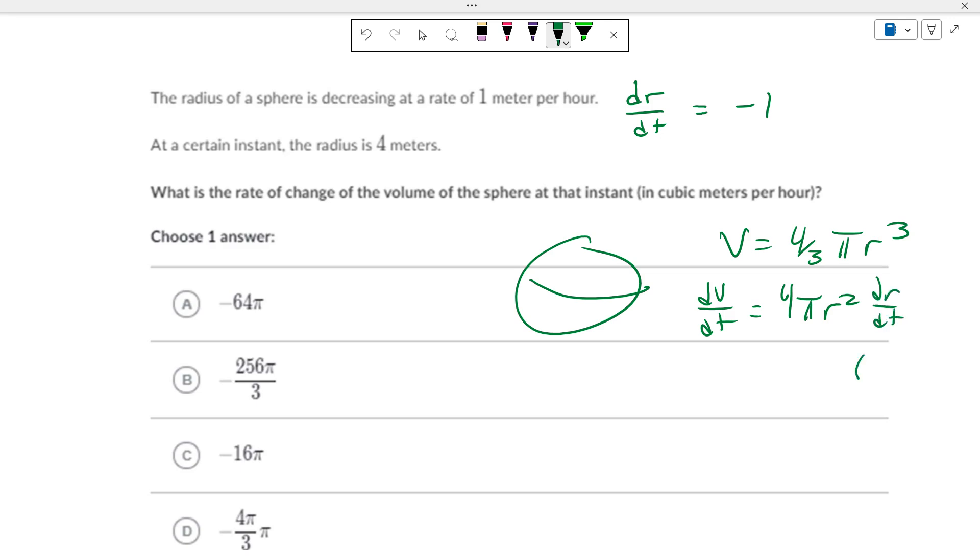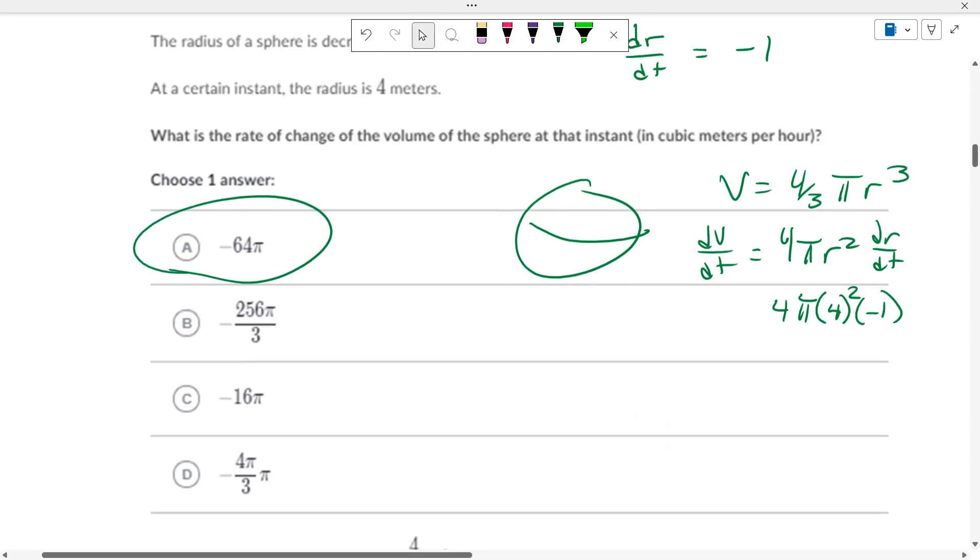dr/dt, we are told, is negative 1. At a certain instant, the radius is 4. So at a certain instant, the radius is 4 squared. This is 4 times pi. So this is negative 64 pi, if you do the math.